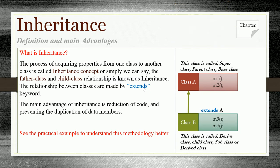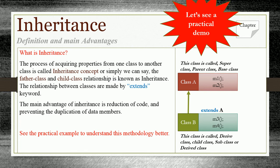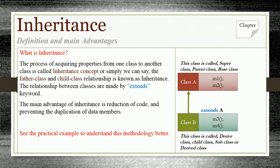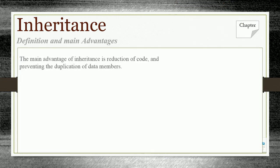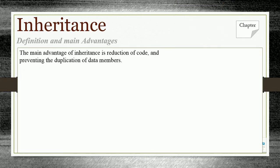Let's see the practical examples to understand the methodology better. Class A is the main or parent class, and Class B is the child class. Class A is also called super class, parent class, and base class.